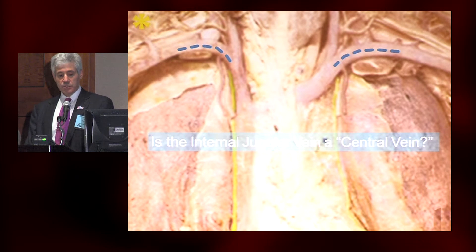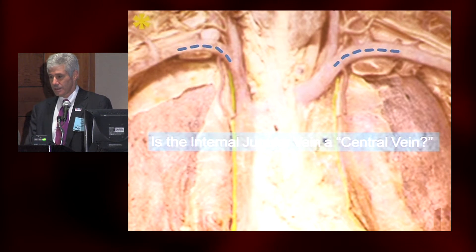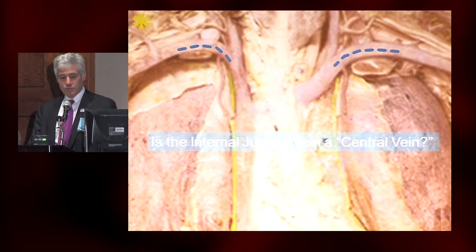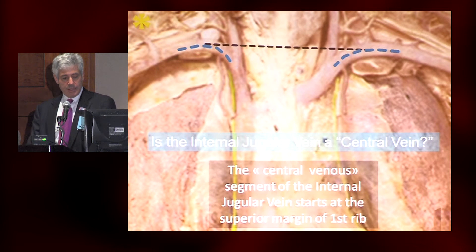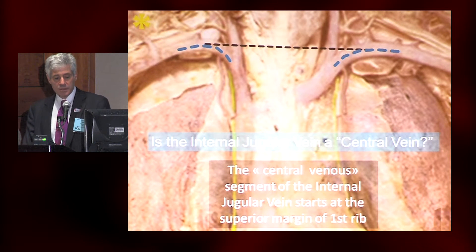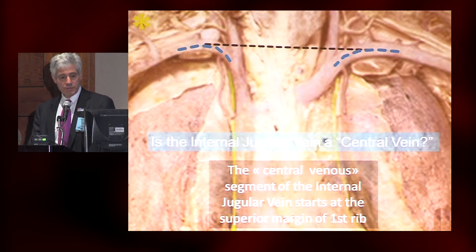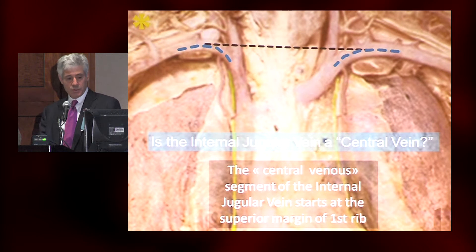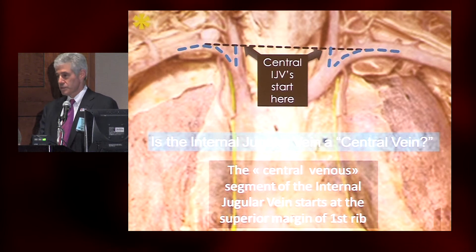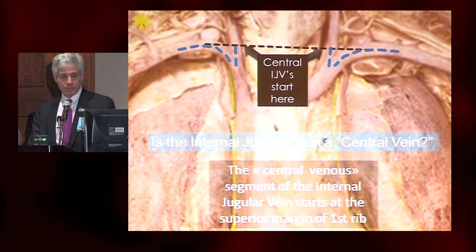Is the internal jugular vein a central or thoracic central vein? The answer is the central venous segment of the internal jugular vein starts at the superior margin of the first rib — so it's extremely short. There's just a short little segment that's intrathoracic for the internal jugular vein.